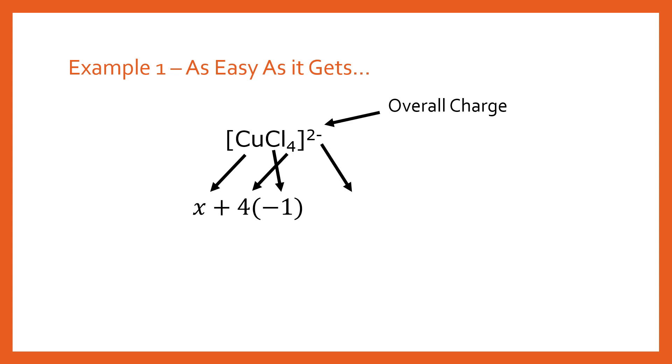Then we set this equal to the overall charge. So we get that equals minus two. And then with some simple algebra we just multiply out the bracket. So x minus four is minus two. And then with extraordinarily simple algebra, just adding four to both sides, we end up with x equals plus two. Therefore our copper is in the two plus oxidation state. And that is how you do that.